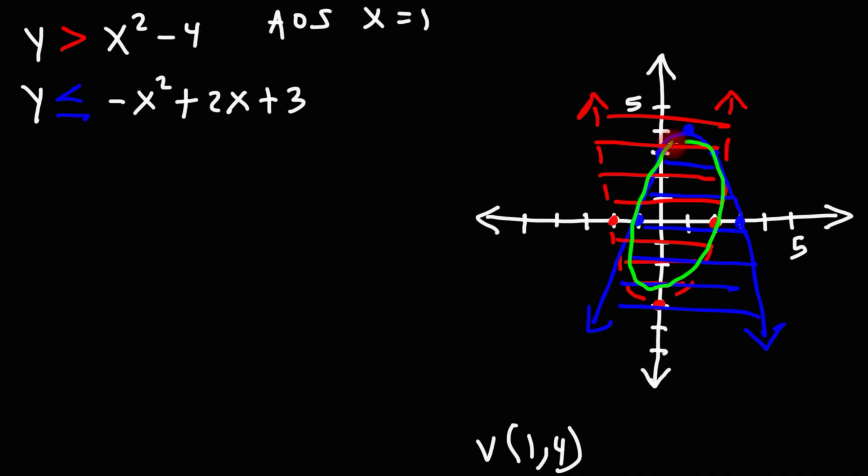So this is where the solution lies, anywhere in this region. So let's use a different color. So this is going to be the answer. In this region, both inequalities will be true. So that's how you can solve a quadratic system of inequalities by graphing.